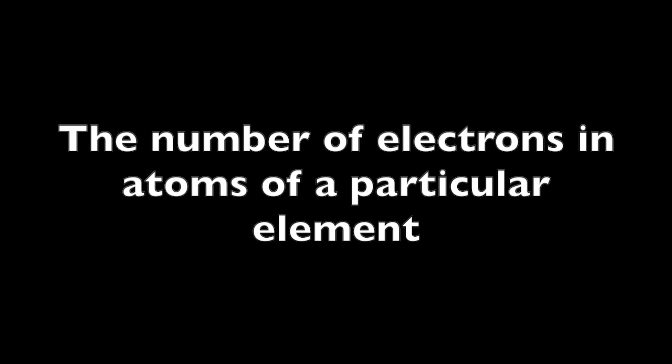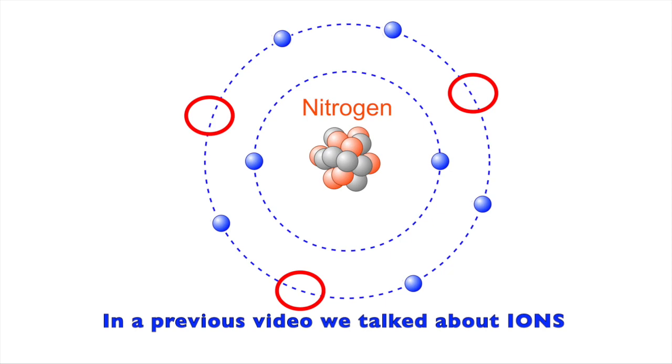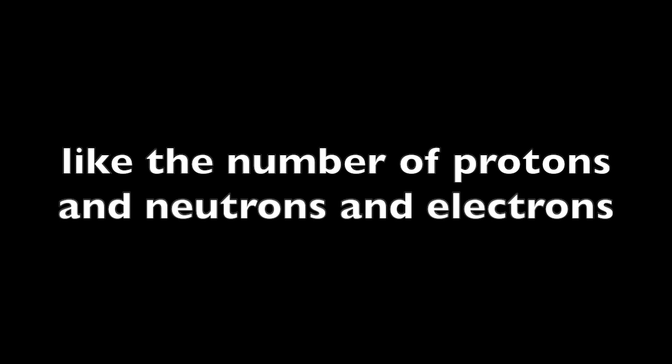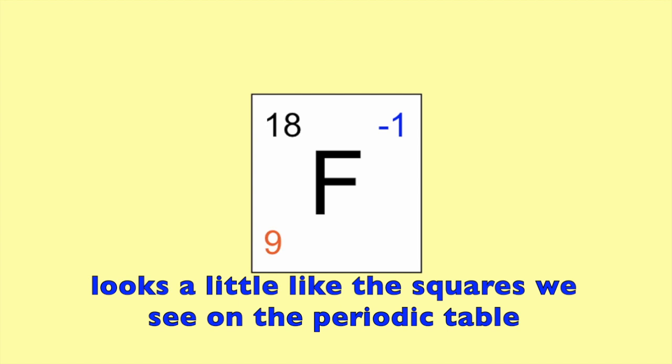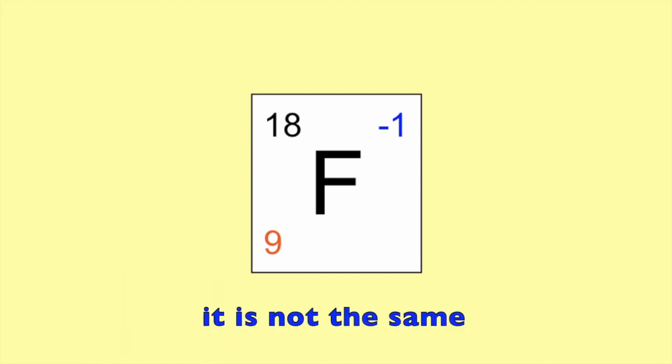The number of electrons in a particular element can vary as well. In a previous video, we talked about ions, which are atoms of a particular element that have either lost or gained electrons. Isotope notation is one method we can use to keep track of things like the number of protons, neutrons, and electrons in a given atom that we are studying. Even though isotope notation looks a little like the squares we see on the periodic table, it is not the same.